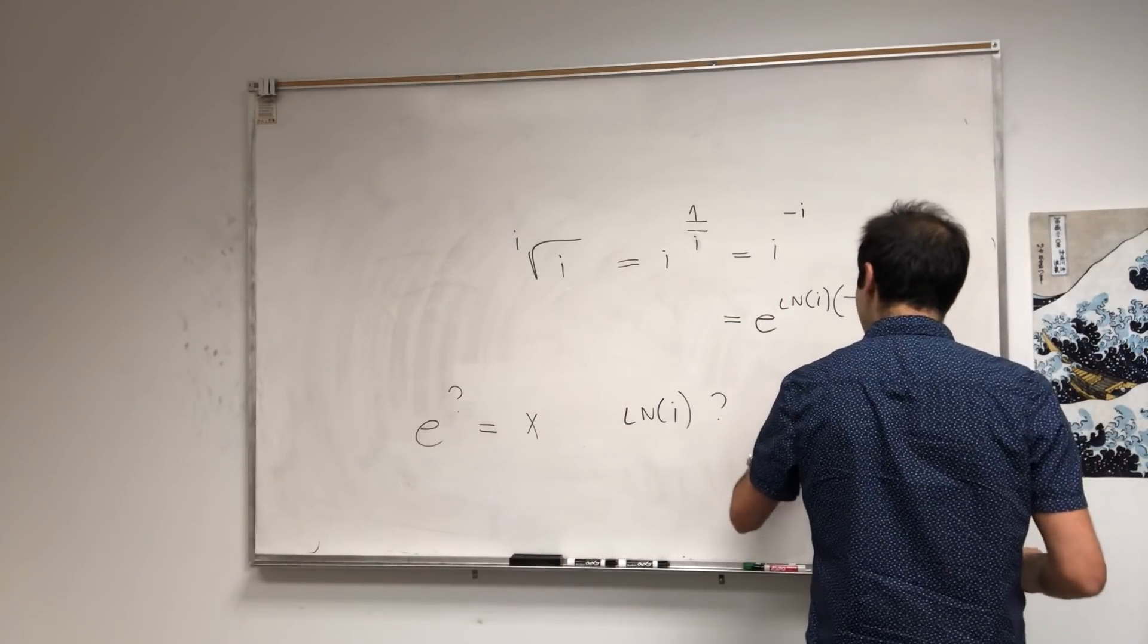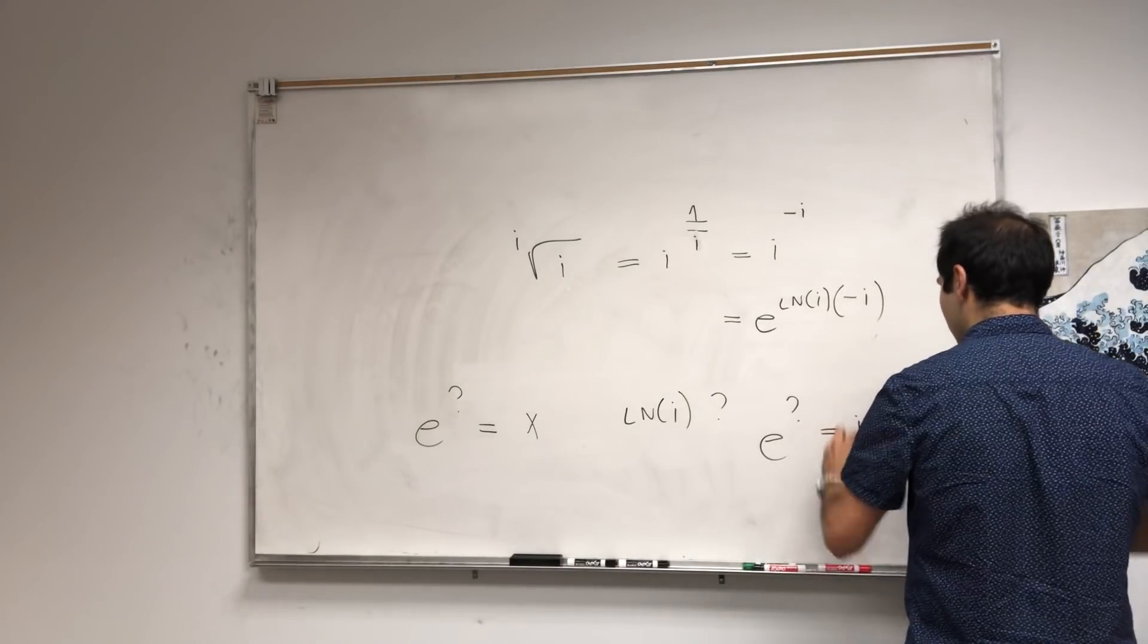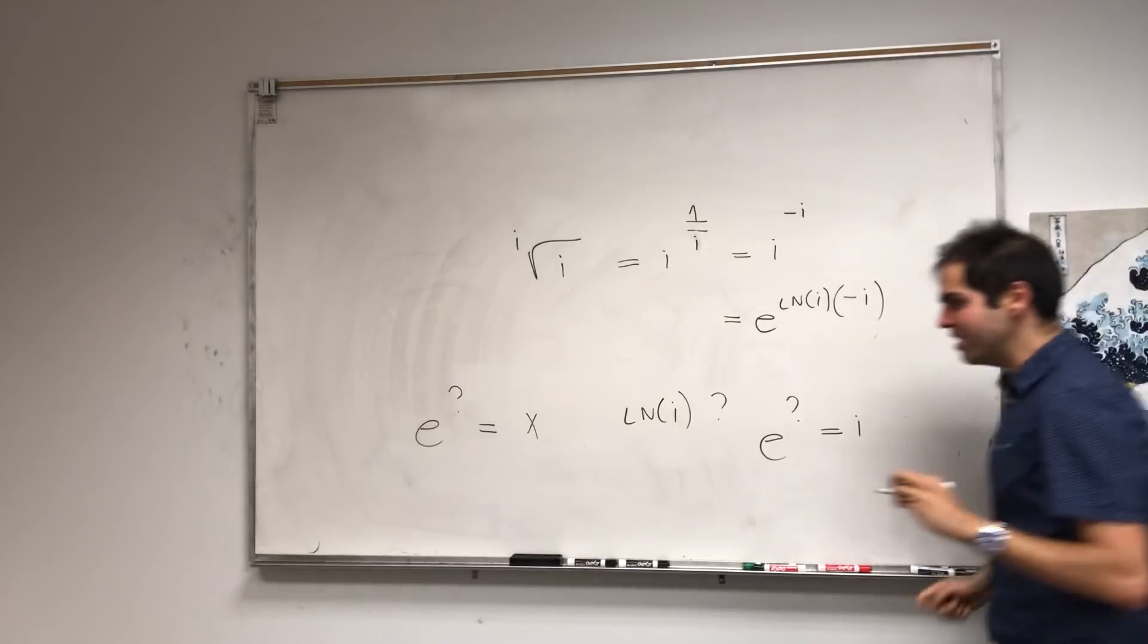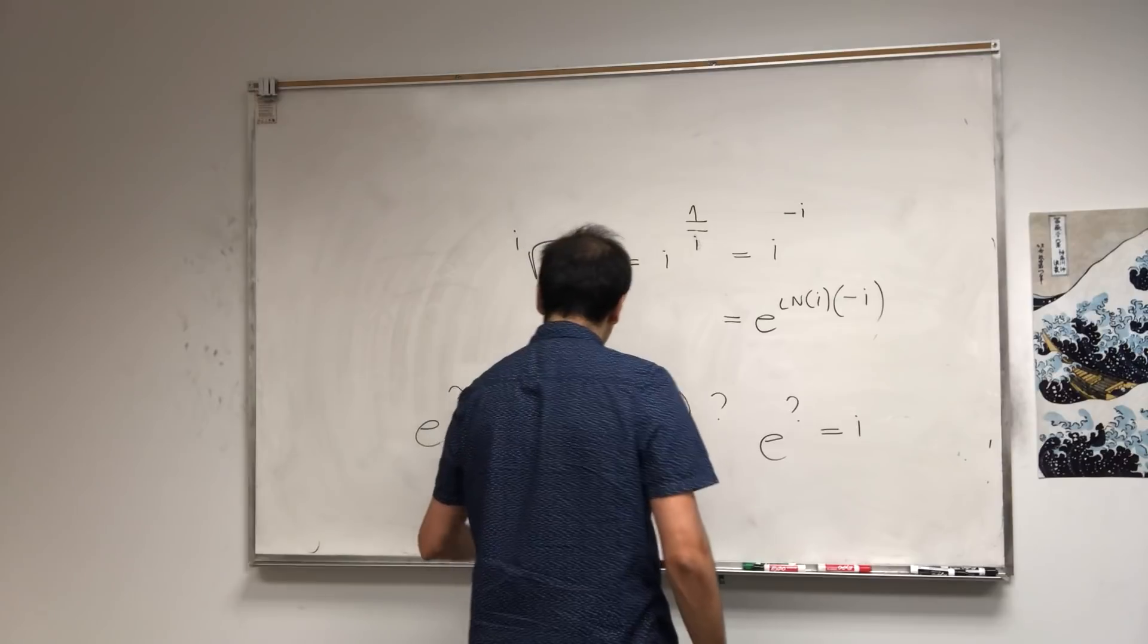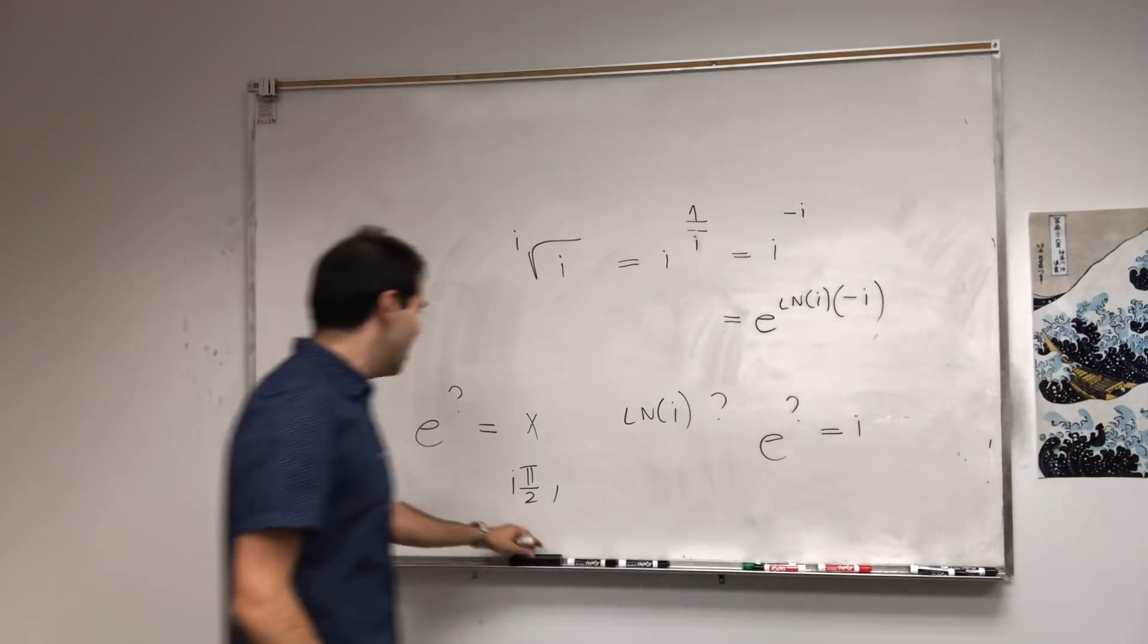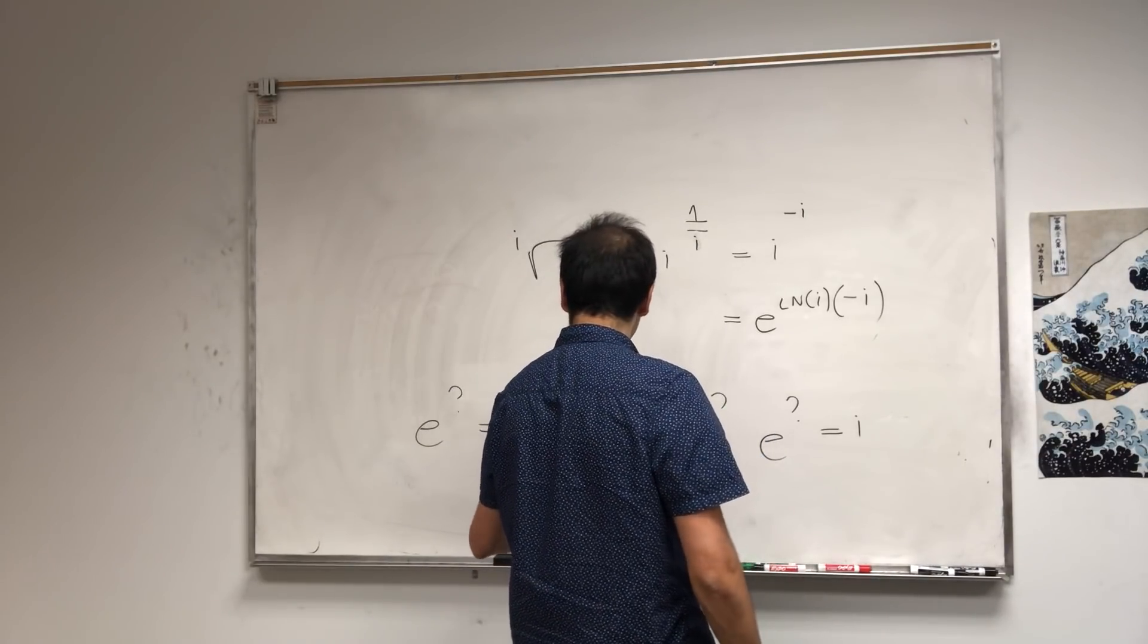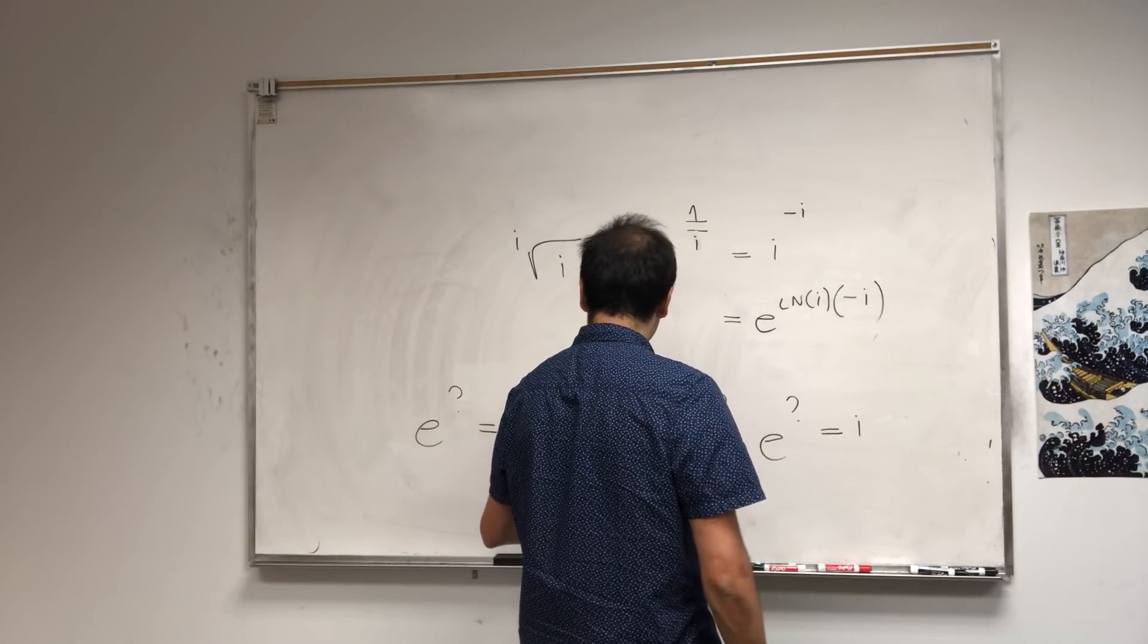So what number do you have to raise e to to get i? And unfortunately, there are many answers, right? There's i pi over 2. There's like i 5 pi over 2, i 7 pi over 2, etc. So really the general answer is i pi over 2 plus 2 pi n i.